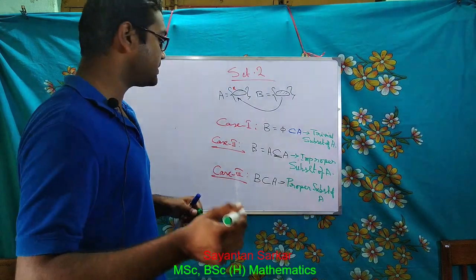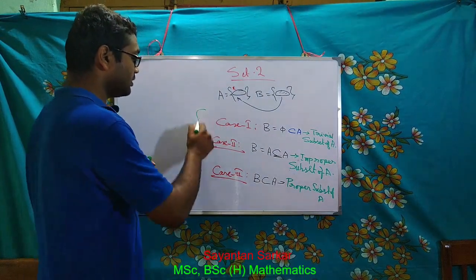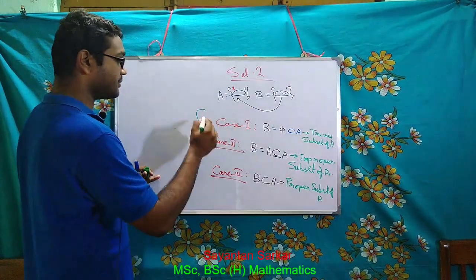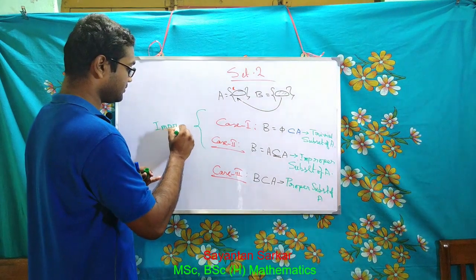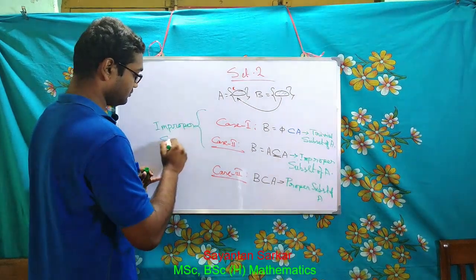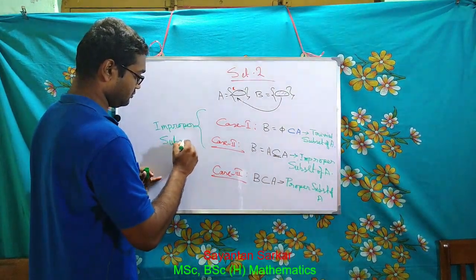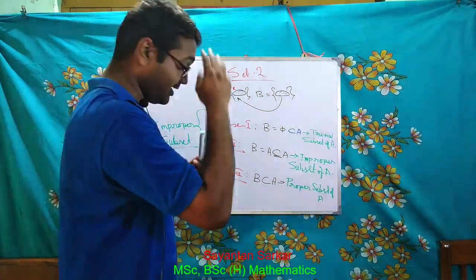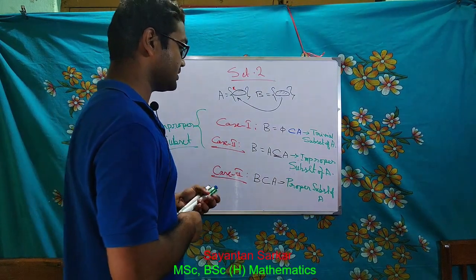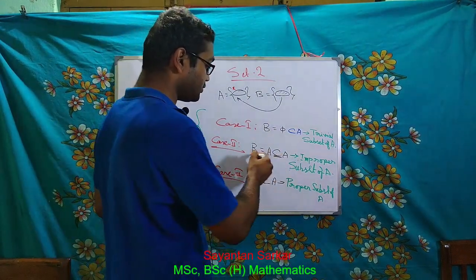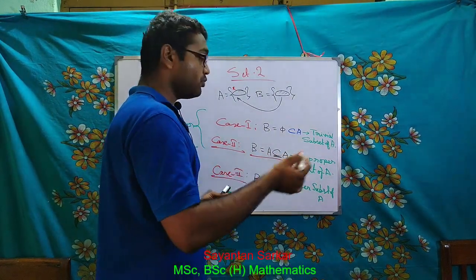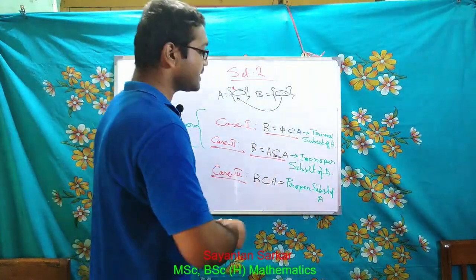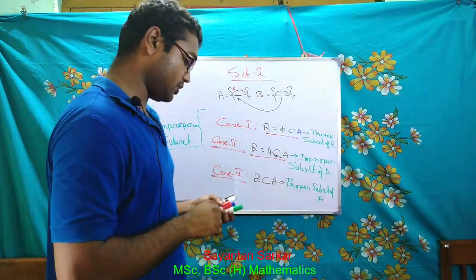So these are the three types of subsets. Now in some books, both the trivial subset and the equal-set case are known as improper subsets. But if you write the null-set case as trivial subset and the equal-set case as improper subset, there is no problem at all.